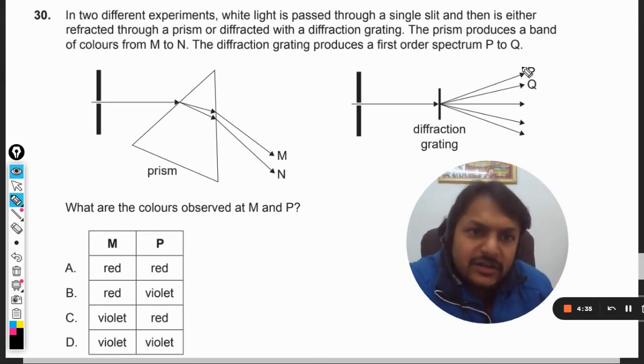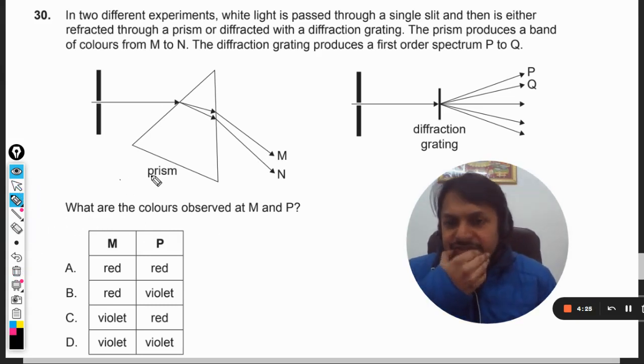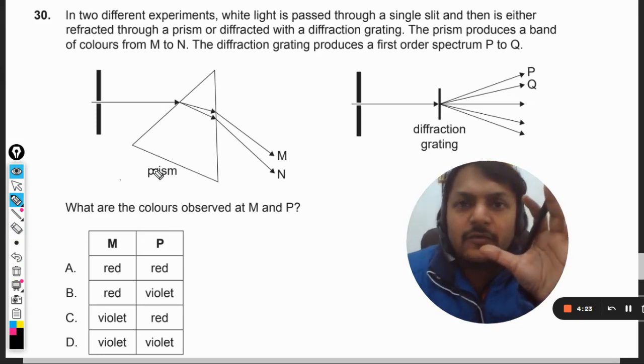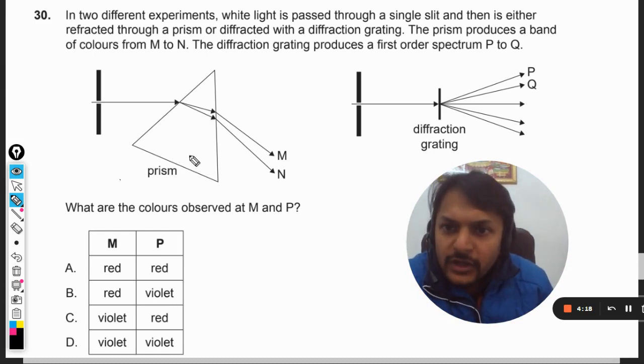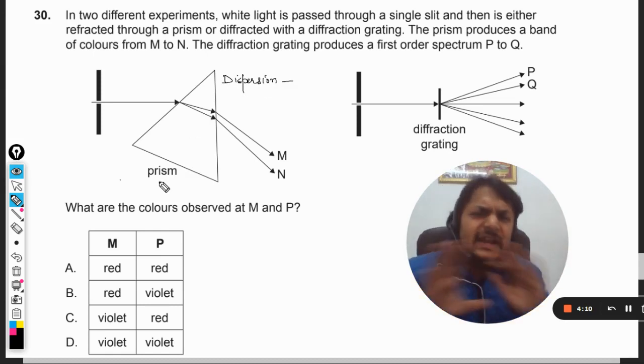So the first order spectrum is created from P to Q like this, and here it is from M to N. What are the colors observed at M and P? Now first of all, we must understand what are the phenomena that are taking place behind these two scenes. In this prism, the phenomena taking place here is known as dispersion.